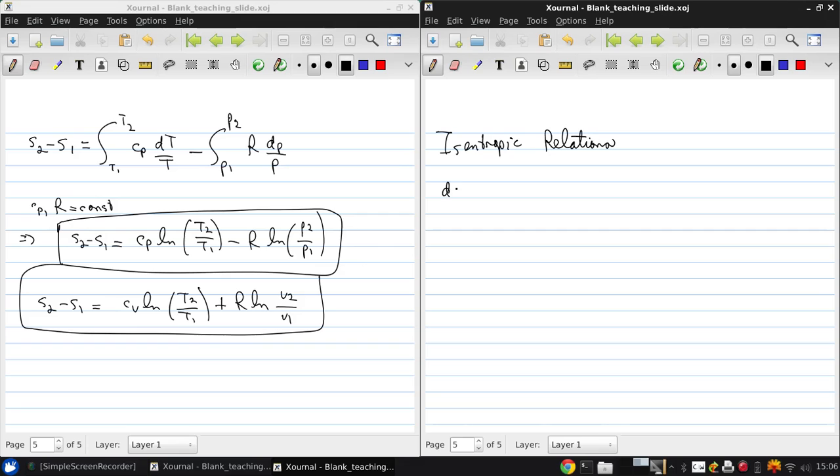So basically, these are processes where ds equals 0, so s2 minus s1 is 0. This is an adiabatic reversible process. So that means that something like cp ln(t2 over t1) minus r ln(p2 over p1) is 0.